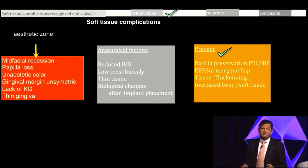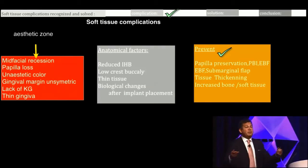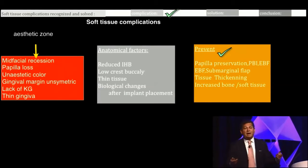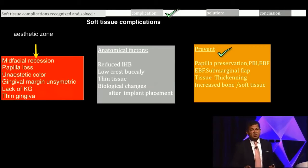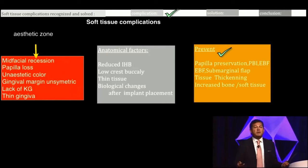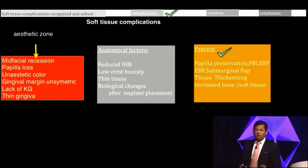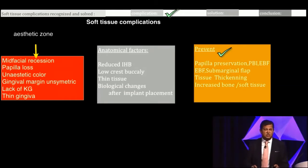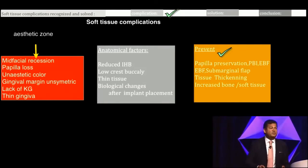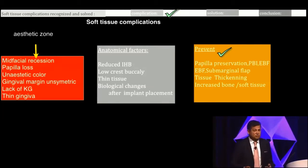A lot of lectures say: if we put the implant there, this will happen. But this is just presumptions, or they are retrospective distortions, as we call them. But if it happens that we have complications, do we have therapeutical solutions?